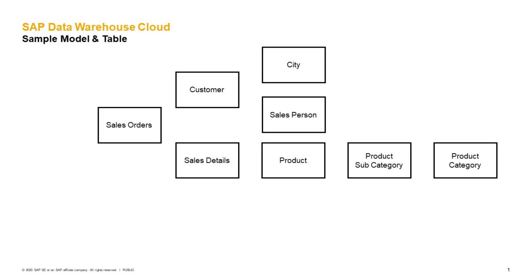Our model will have a total of eight tables. We will have sales orders, we will have sales details that are going to point to a table for a product, product subcategory, and a product category. Also our sales orders will point to the table for a customer, and then from a customer we will go to the table city and salesperson.